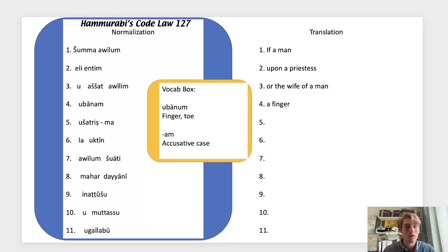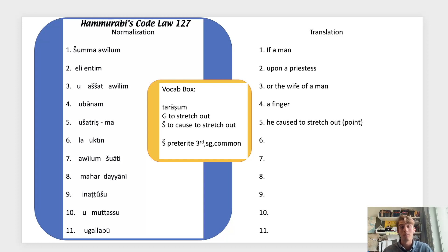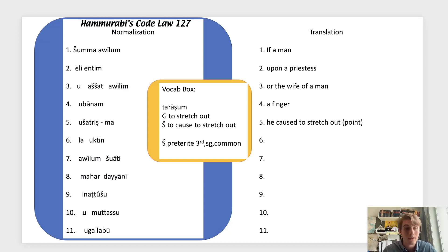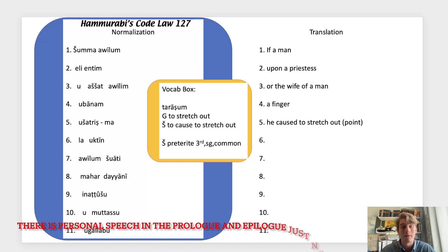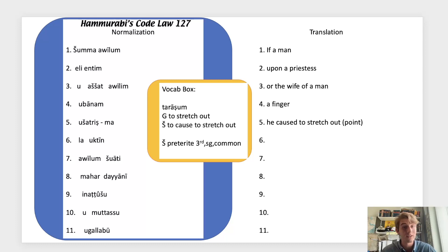On line four we have ubānam — 'a finger or a toe' — in the accusative. And we have ušatrīṣ, our Sheen system verb. This comes from tarāṣum, which in the G system means 'to stretch out,' so in the Sheen system we have the causative meaning 'to cause to stretch out.' Based on the I and lack of a perfect T, this is preterite. Based on the U prefix, we have a third person singular common subject — and we know this isn't first person because Hammurabi's Code doesn't use first person speech.